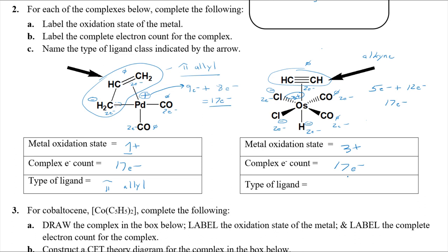And then finally, the type of ligand that's pointed to, again, was the alkyne. You could also say acetylene. That's perfectly fine. Remember, alkynes are short for three. Alkenes would be two. So there you go. Not too bad.